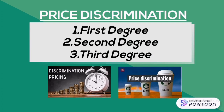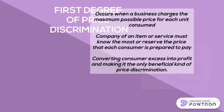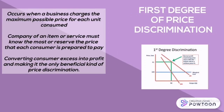Price discrimination is divided into three categories: first, second, and third degree. First degree, or perfect price discrimination, occurs when a business charges the maximum possible price for each unit consumed. Because prices vary among units, the firm captures all available consumer surplus. The monopoly company must know the reserve price each consumer is prepared to pay. The vendor may then offer products or services to every customer at the best price they are willing to pay, converting consumer surplus into profit.